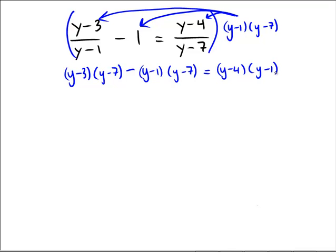Okay, now, distributive properties would yield y squared minus 10y plus 21 minus y squared minus 8y plus 7 equals y squared minus 5y plus 4.